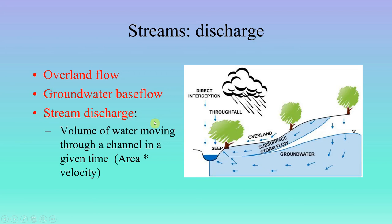What's coming out of the stream is known as stream discharge — this is the volume of water moving through a channel in a given time. We calculate this as area times velocity: we take measurements to figure out the cross-sectional area of the stream, then use a flow meter to measure velocity. So if we do this in feet, discharge is in cubic feet per second — something you're always interested in if you're a white water rafter, kayaker, canoeist, or fisherman.